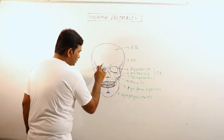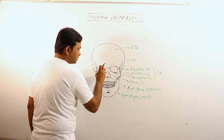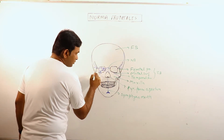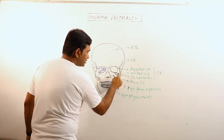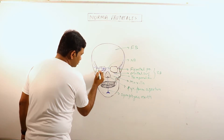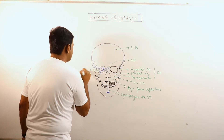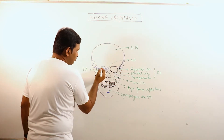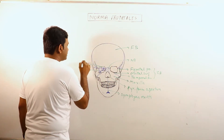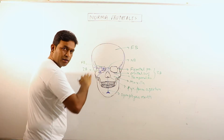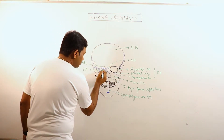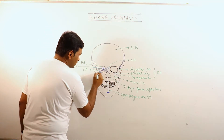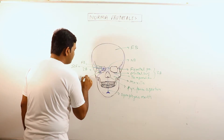Now this is the orbit. The bones forming the orbit are: this is zygomatic bone, so this lateral boundary is basically made up of zygomatic bone. This is frontal bone, forming the upper margin. This is the superior orbital fissure, and this is the inferior orbital fissure.